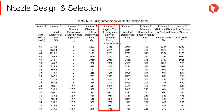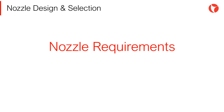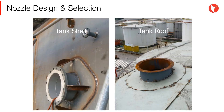Nozzles under 2 inches NPS do not require reinforcement. Next, we will review the requirements for nozzles to be installed on storage tanks. Most of the nozzles on storage tanks are found primarily in the tank shell and in the tank roof. As mentioned before, the requirements for nozzles are indicated in the API 650 standard. Special attention shall be paid to the minimum distance between nozzles installed on these tank parts.